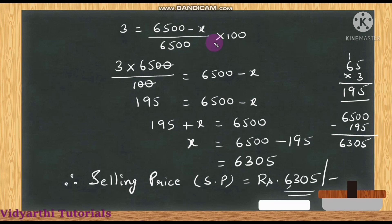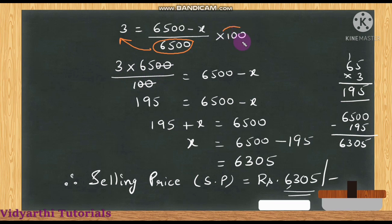So: 3 = (6500 − x) ÷ 6500 × 100. Solving this: move 6500 to the other side to get multiplication. So 3 × 6500 ÷ 100 = 6500 − x. The zeros cancel, giving 3 × 65 = 195 = 6500 − x.